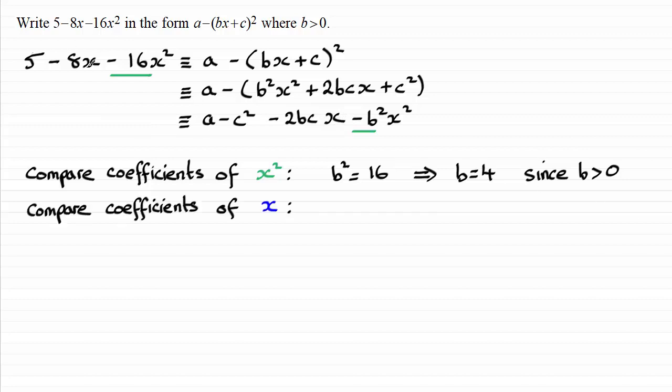So by comparing the coefficients of x, I see that we've got negative 8 here and we've got minus 2bc there. So what we have then is that minus 2 times b (b is now 4) times c must equal the coefficient of x, which is negative 8. And from here we've got minus 8c equals minus 8, so clearly then c must be equal to one.